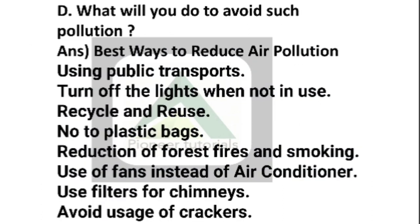Question 3D: What will you do to avoid such pollution? The best ways to reduce air pollution include using public transport, turning off lights when not in use, recycle and reuse, avoid plastic bags, reduction of forest fires and smoking, use a fan instead of air conditioner, use filters for chimneys, and avoid use of crackers. These are some of the things which will reduce pollution.